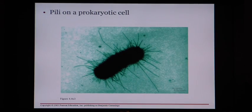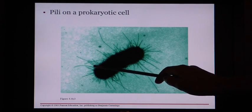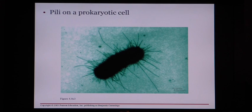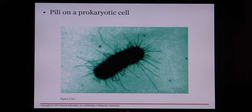Here is another bacterial cell with a special feature: lots of little hair-like projections hanging off of it called pili. Pili are sticky hairs that allow bacteria to stick to surfaces — whether to the table you're leaning on, your cell phone, or your skin. Bacteria grab on and stick to surfaces using these little sticky hair-like projections called pili.